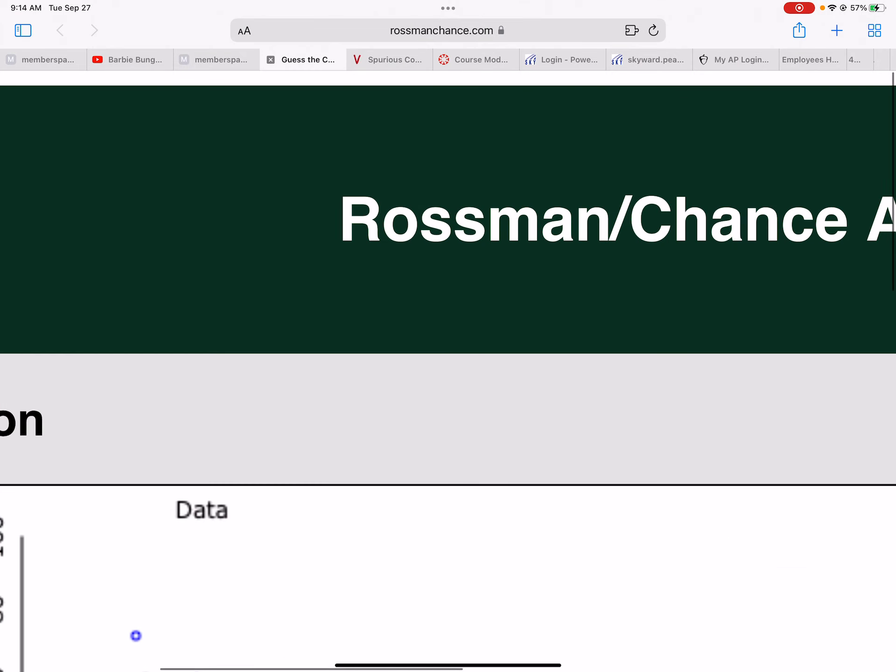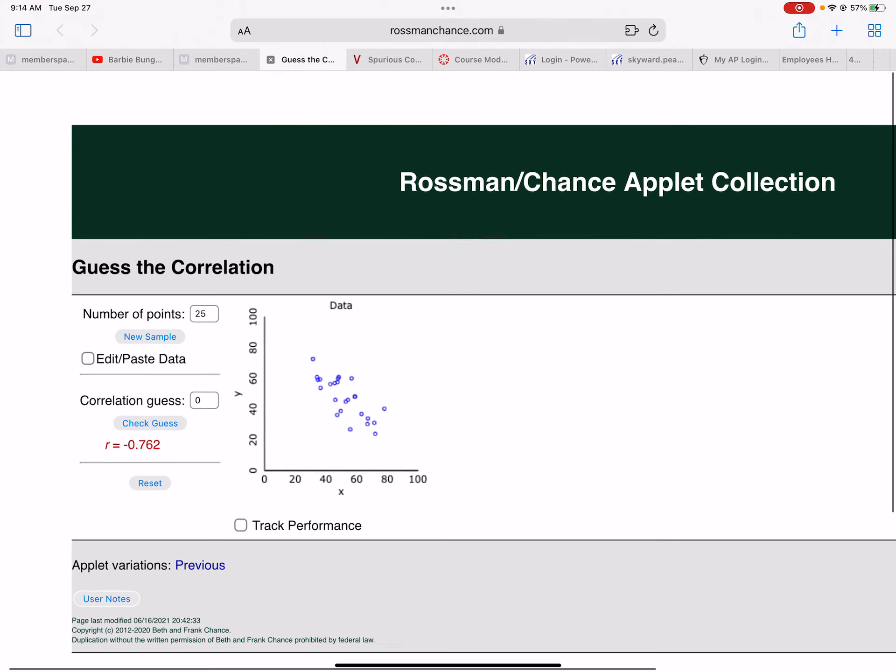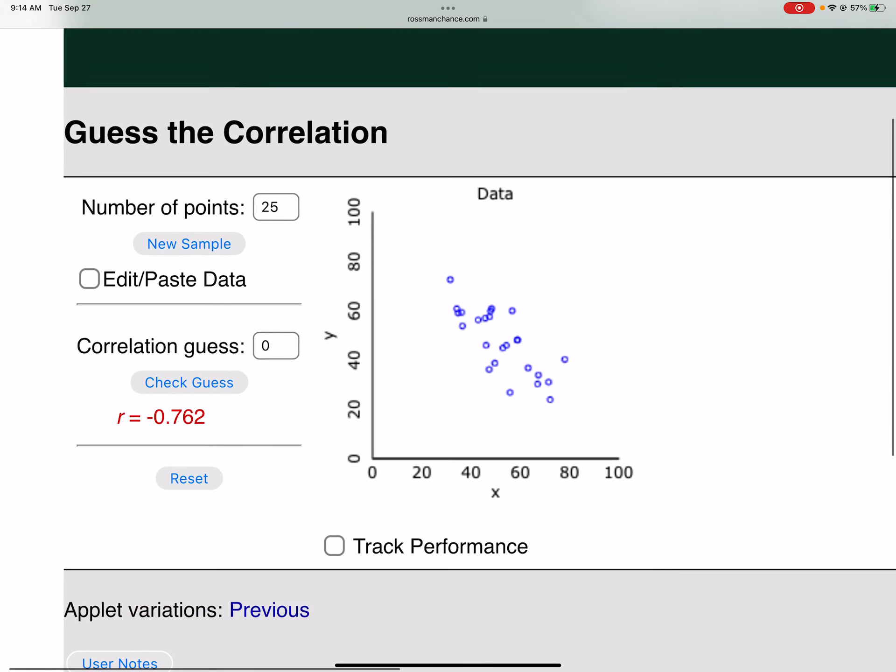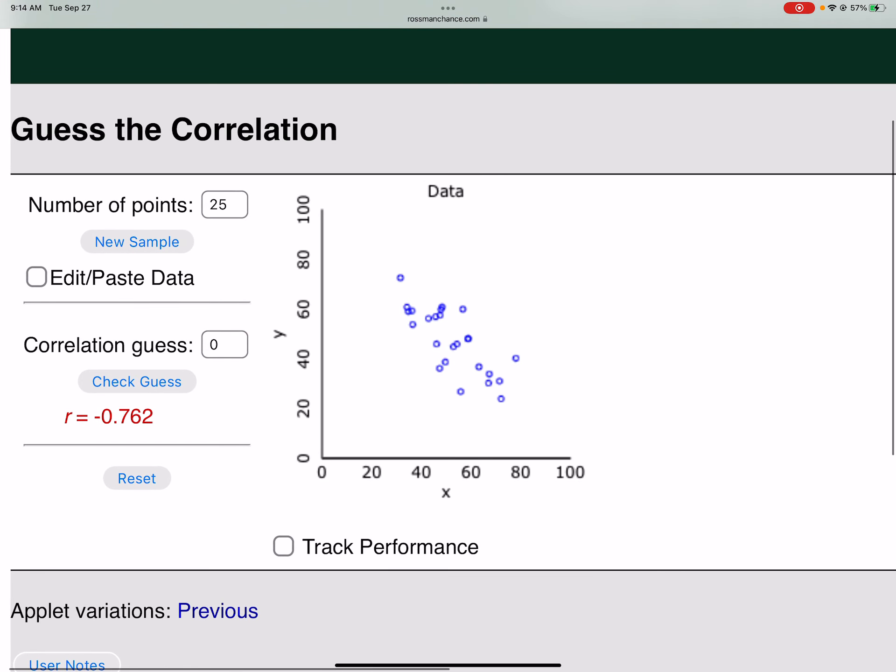So we started out in the morning and we did a guess the correlation. This applet is something that is available that I can give you guys if you would like it. Basically what we did is we saw the sample of the data, and then we can put a guess in here. We checked our guess, and we said, okay, the correlation is negative 0.410. We're going to go through a couple of these just to guess your correlation and see how good you are.